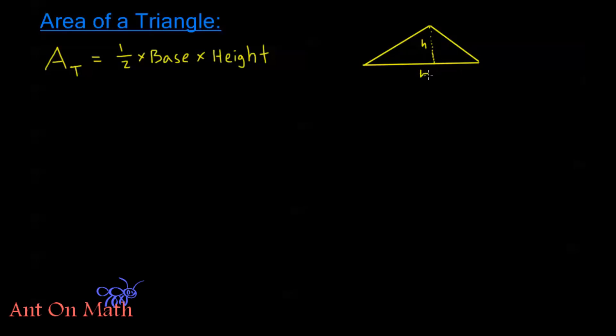We'll call this bottom side here b. Now let's say that I have this angle theta here, and I know that this side of the triangle has a length of a. Well let's take a look at what that means.